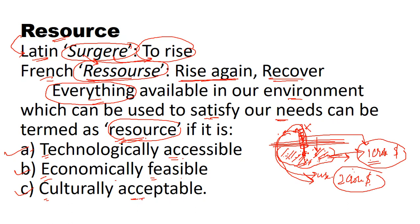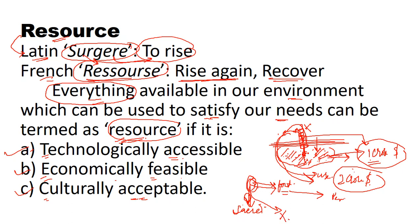The third condition is that it should be culturally acceptable. For example, some animals are used as a source of food in certain countries, while those same animals are considered sacred in other countries. If an animal is used as a food product in a country, it is a resource there. But in a country where it is considered sacred or not used as food, it is not a resource. So remember the three conditions by the acronym TEC: Technologically Accessible, Economically Feasible, and Culturally Acceptable.